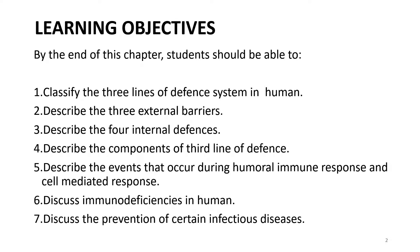At the end of the chapter, students must be able to achieve 7 learning outcomes for this topic. The first one: students must be able to classify the 3 lines of defense system in humans. The second: describe the 3 external barriers.